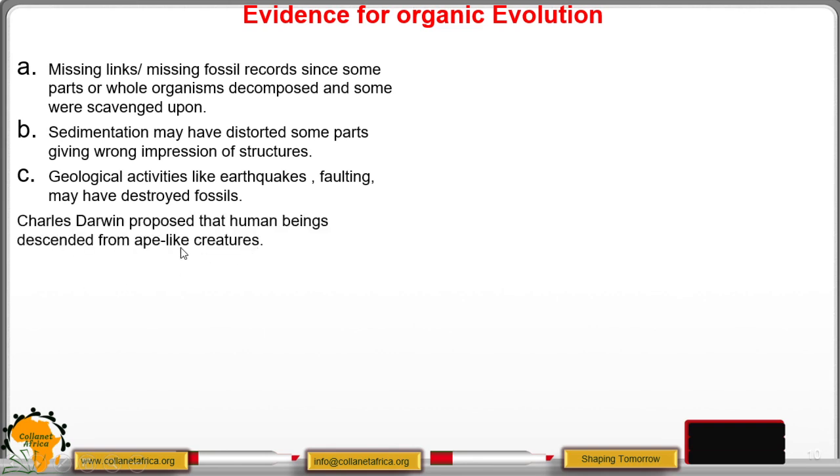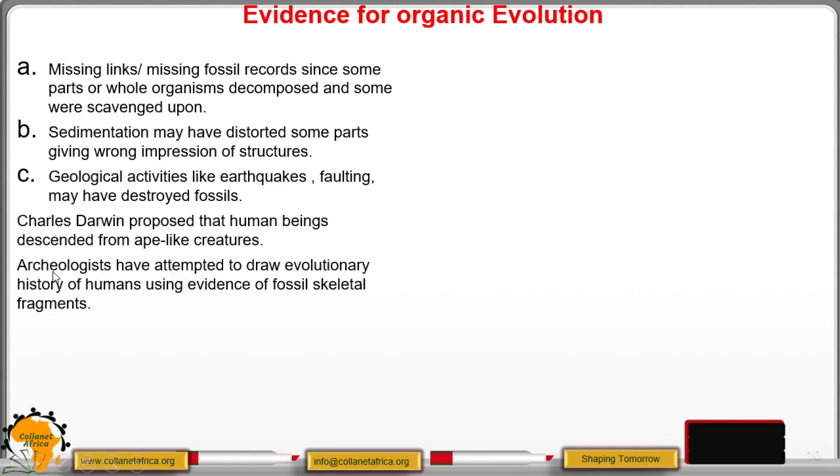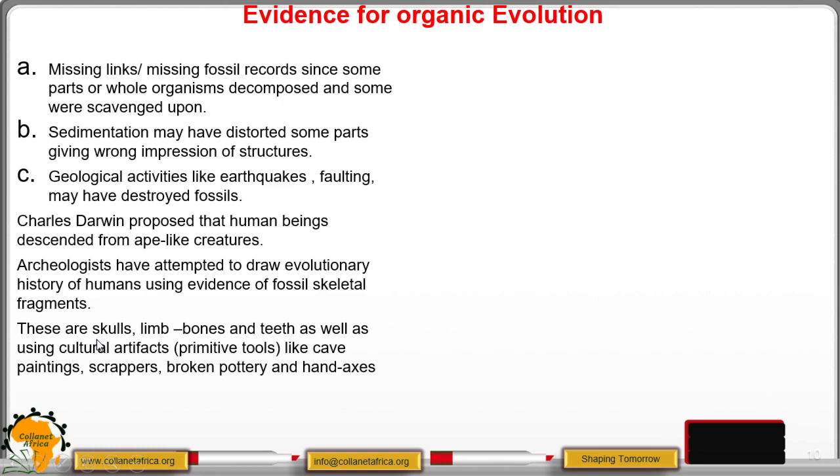Charles Darwin proposed that human beings descended from ape-like creatures. Archaeologists or people who study fossils have attempted to draw evolutionary history of humans using evidence of fossil skeletal remains. These include the skull, the limb bones and teeth as well as using cultural artifacts and these are the primitive tools that were used by the apes, for example cave paintings, scrapers, broken pottery and hand axes that were used for hunting.